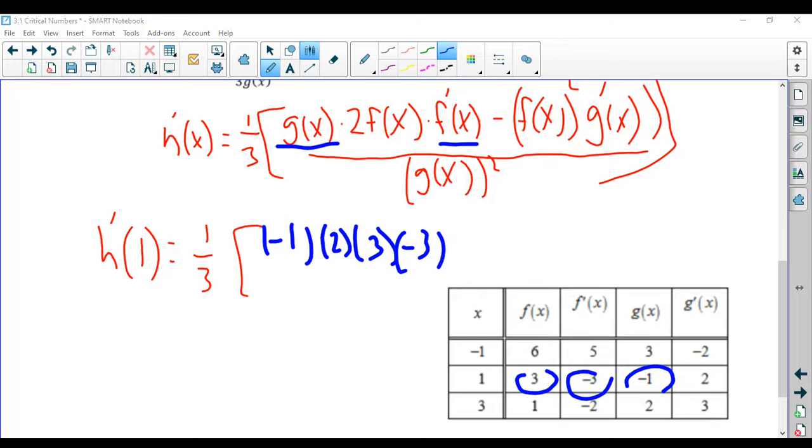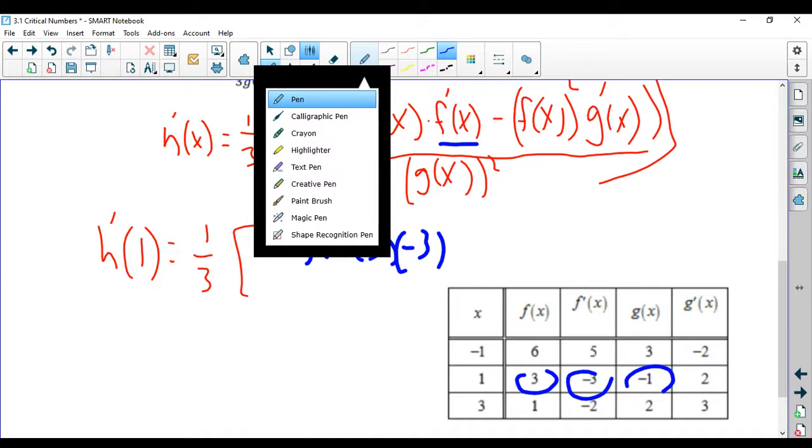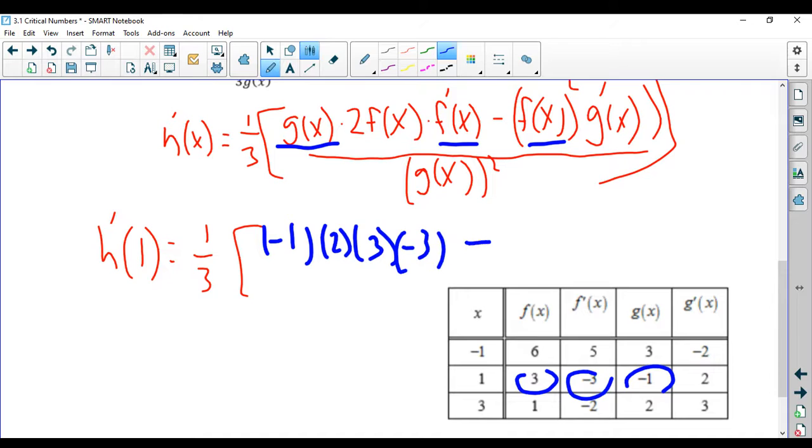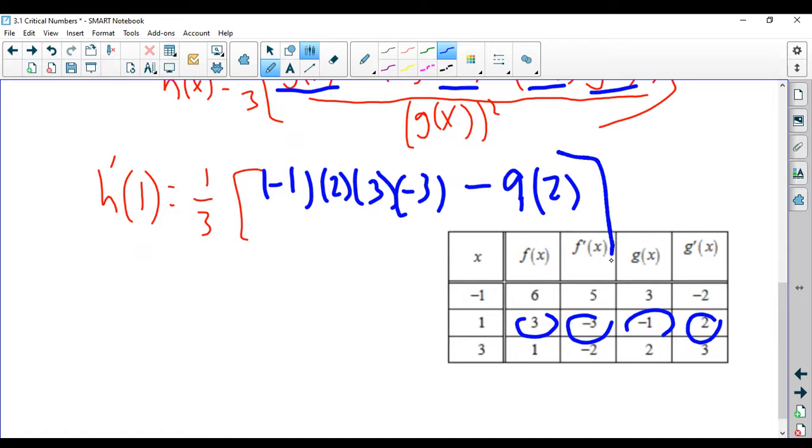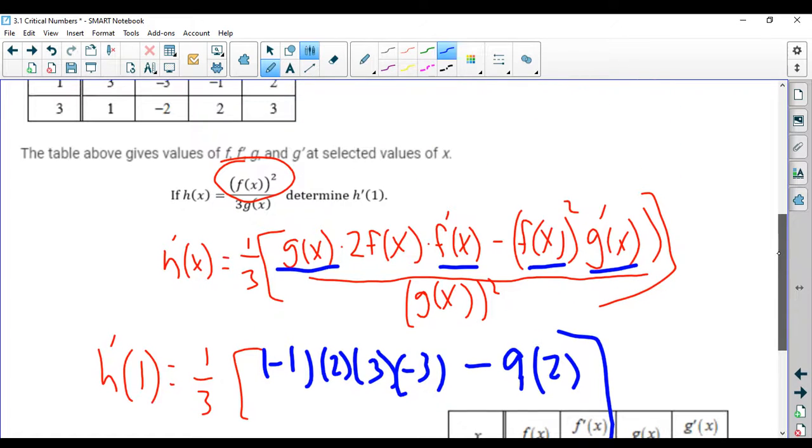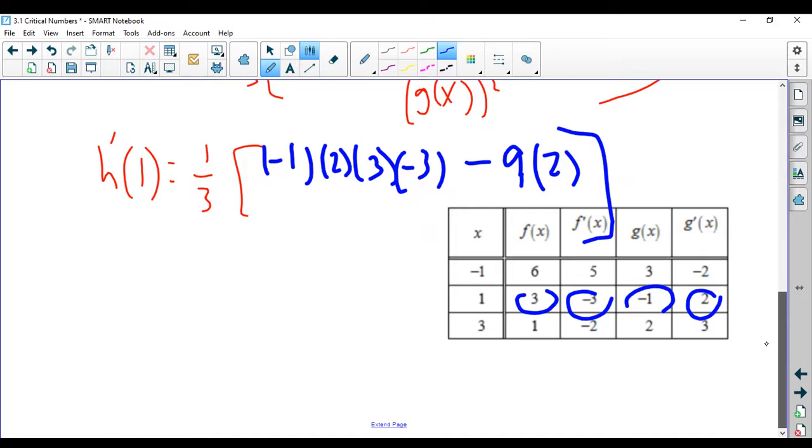And now we have minus, minus f of 1 squared. So f of 1 was 3. 3 squared is 9. Times g prime of 1, which is right here. And then this is all over g of x squared, g of 1 squared, and g of 1 again is negative 1. Negative 1 squared is 1. That's it.